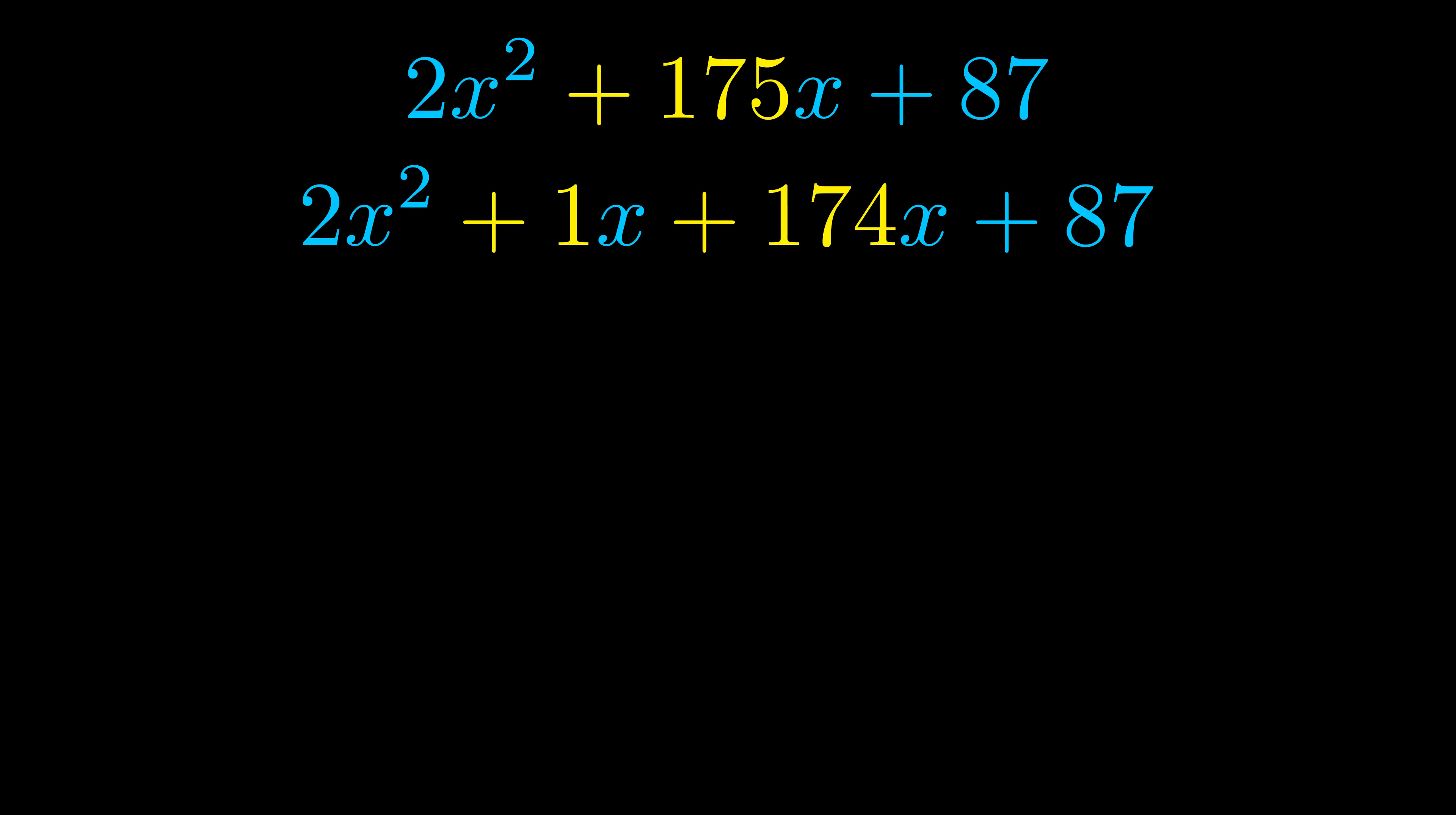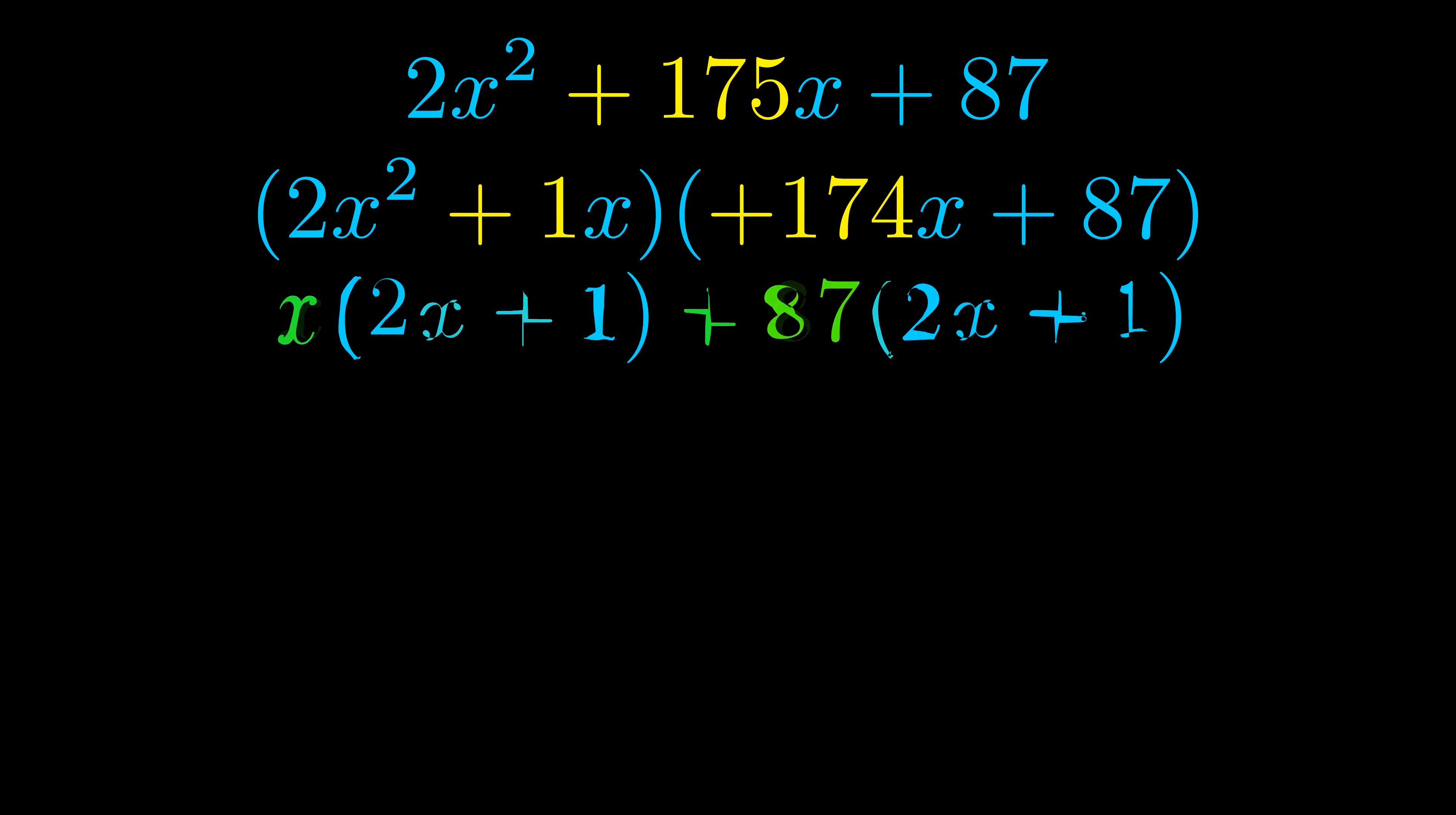Once we've done this we go ahead and put parentheses around the first term and the last term and we do that so that we can take the greatest common factor out of both terms. We can see the greatest common factor is now outside in green.